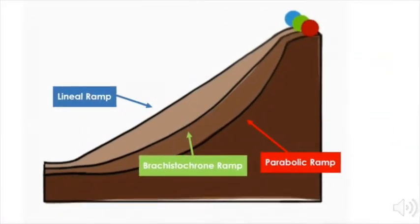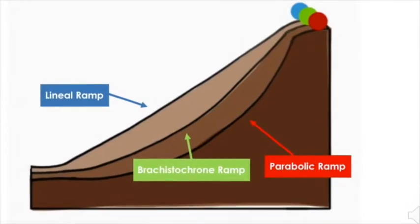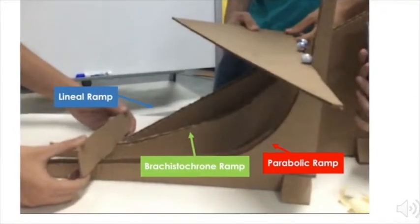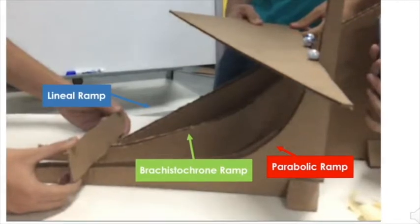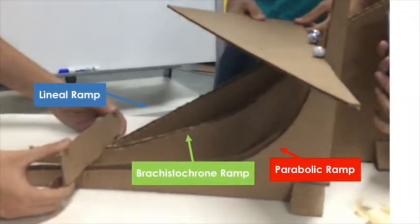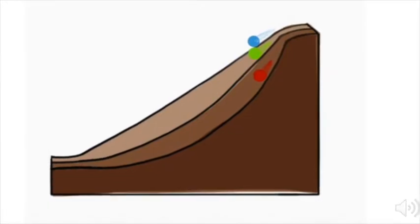In this experiment, we are going to build a small model with a Brachistochrone, a linear, and a parabolic ramp. We will put them to the test with the objective to prove that the Brachistochrone ramp is the optimal line for accelerating an object with the use of gravity.